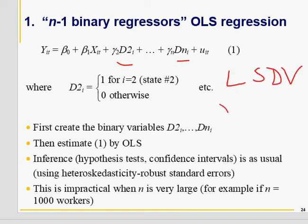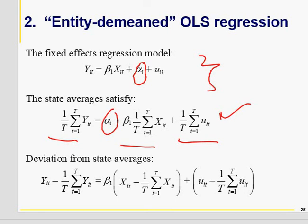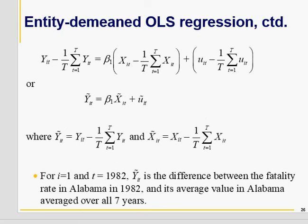This is called the Least Square Dummy Variable model. But if n is very large, you can lose a lot of degrees of freedom — for example, if n equals 10,000, you need 9,999 dummy variables. Instead, we use entity demeaned regression: we take the average over time of all the variables and then subtract this from the original. The entity-specific effects, which we assume do not change over time, will cancel out, and only the impact of X on Y remains. This is called entity demeaned regression.